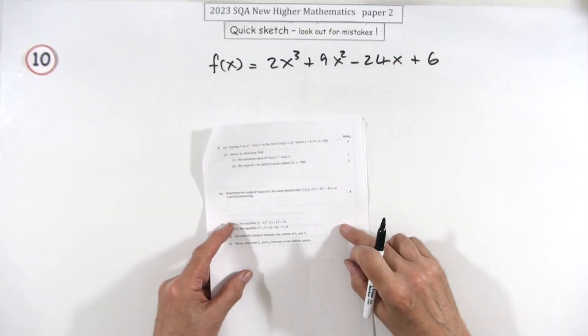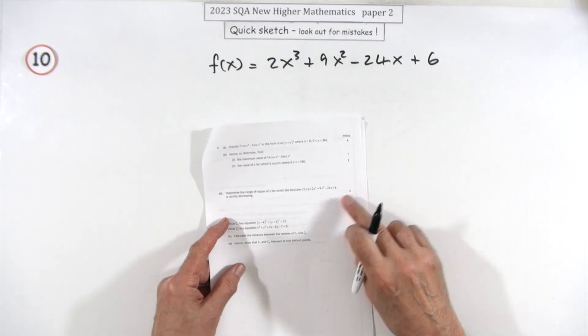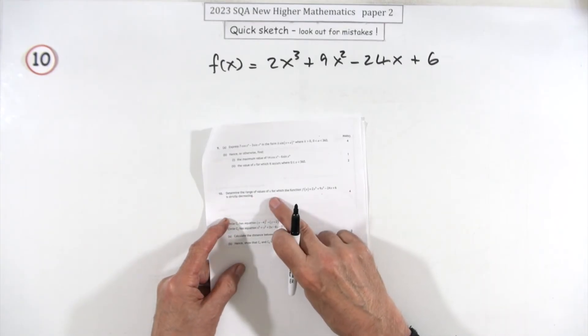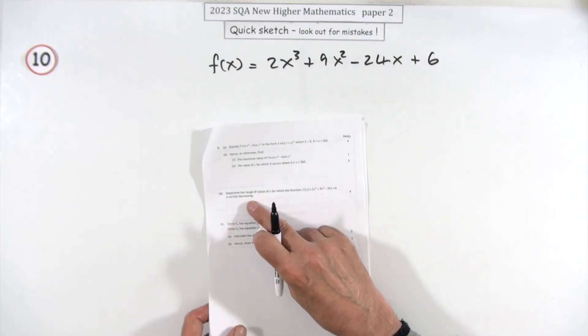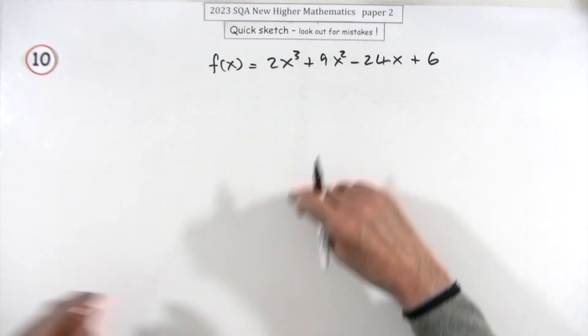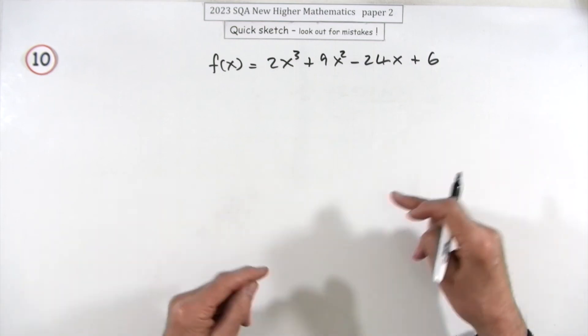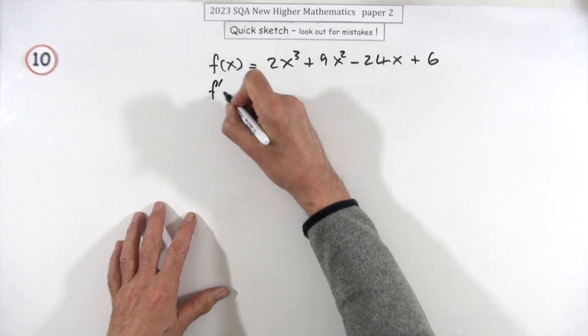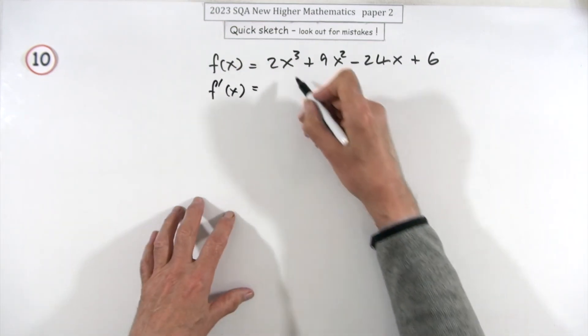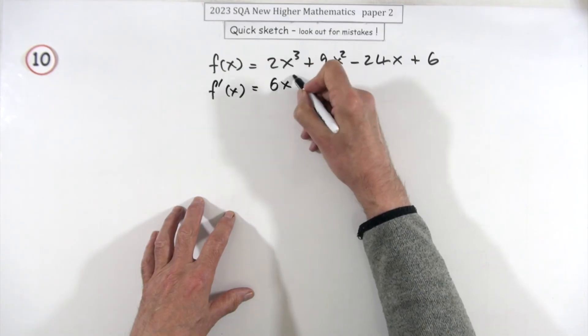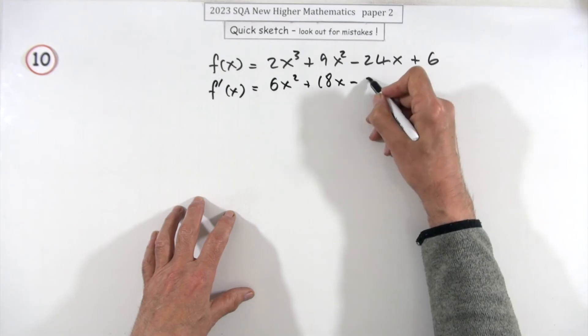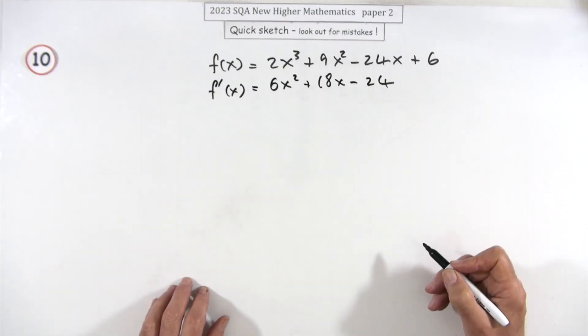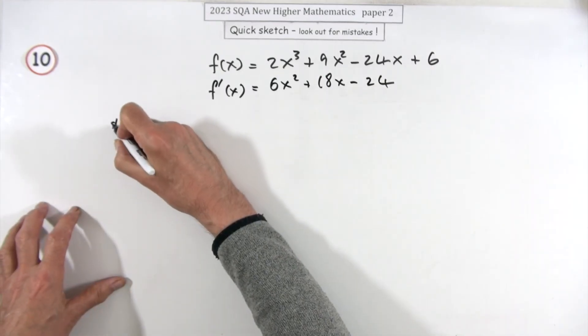Question 10 then, paper two, four marks. Determine the range of values for x for which this function is strictly decreasing. Well, you'll know which way it's going from its gradient, which you'll get from its derivative. So differentiate it. So that'll just be 6x² + 18x - 24.